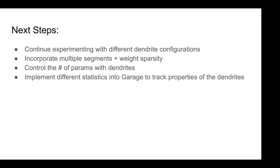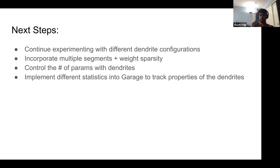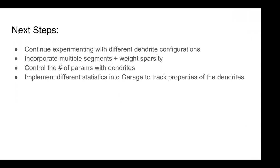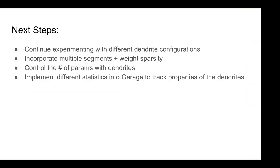In the multitask setting, a key challenge is that scaling up parameters helps any network since all data is seen simultaneously. A dense network with the same number of parameters as the wide dendritic network might do comparably well. Getting good results while controlling for parameter count is the real challenge of this project.